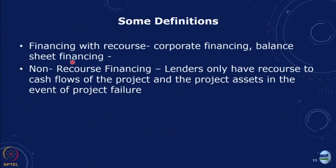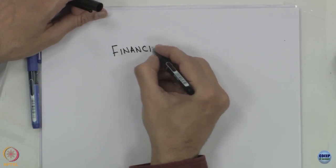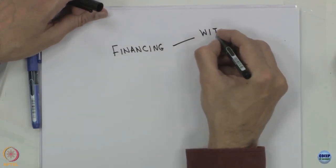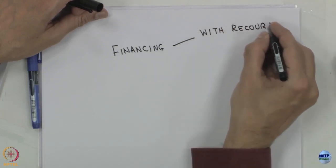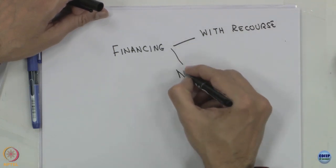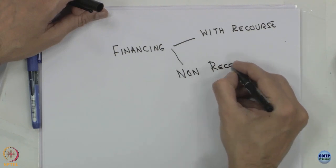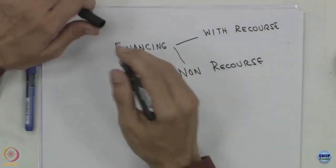We have to define the difference between financing with recourse and non-recourse financing. Financing with recourse means that in case there is a problem and the funds have to be repaid, we can go ahead and access the corporate balance sheet. So, you have recourse to the rest of the funds of that company.